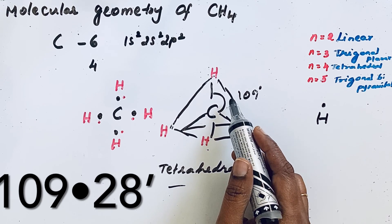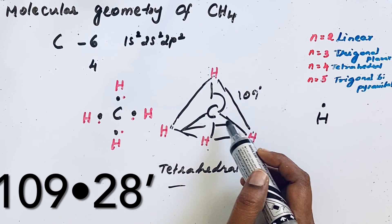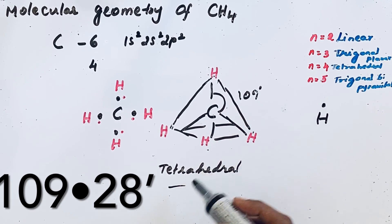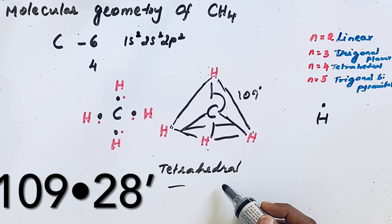In CH4 molecule, the bond angle between one C-H and another C-H bond is 109 degrees, and the molecular geometry is tetrahedral. Thanks for watching.